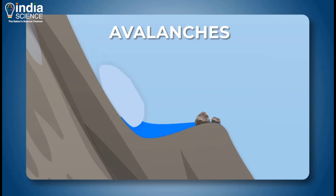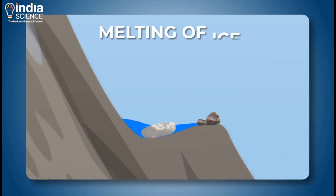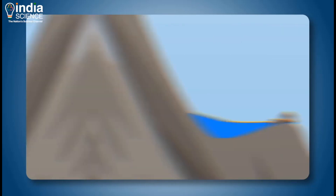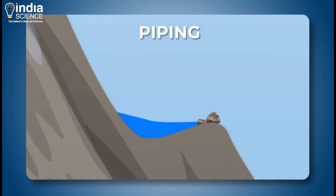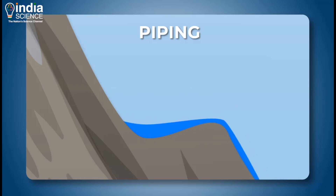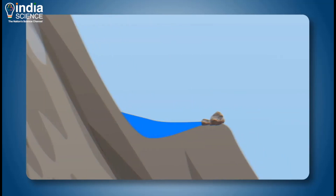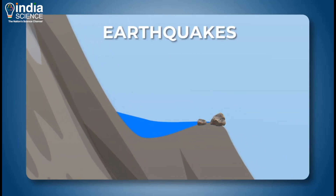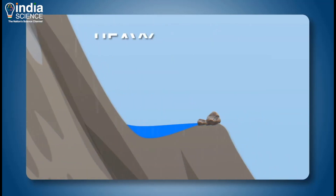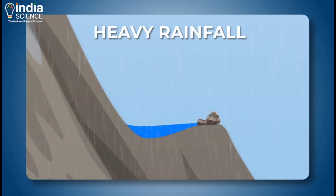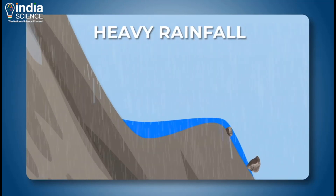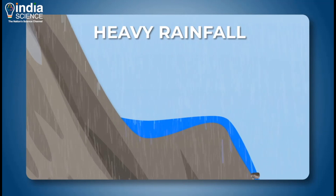An outburst can be triggered by several factors: ice or rock avalanches; the collapse of moraine dams due to the melting of ice buried within; the washing out of fine material by water flowing through the dam, known as piping; earthquakes; or sudden inputs of water into the lake, for example through heavy rains or drainage from lakes further up the glacier.